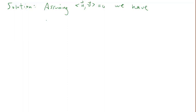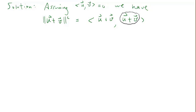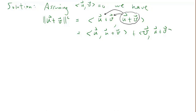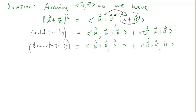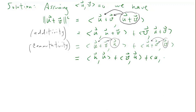The solution: assuming u and v are orthogonal, let's write out the expression for the square of the length of u plus v. That's the inner product of u plus v with itself. Using the additivity property, we distribute the right-hand u plus v to u and v, getting the inner product of u with (u+v) plus the inner product of v with (u+v). Then using commutativity and distributing again, we get: the inner product of u with u, plus the inner product of v with u, plus the inner product of u with v, plus the inner product of v with v.